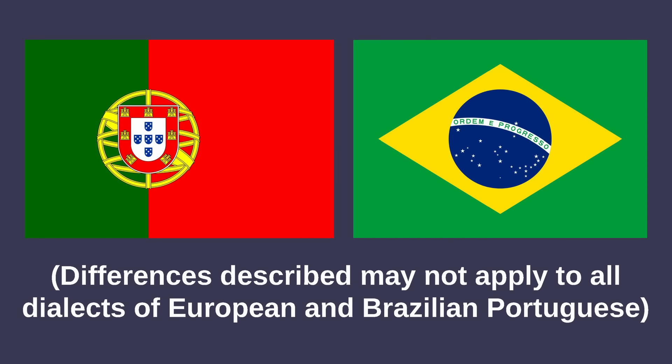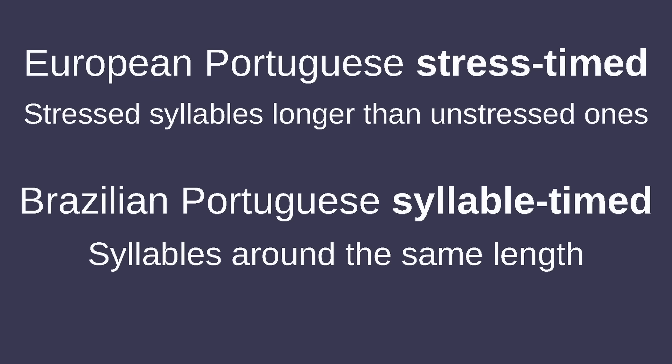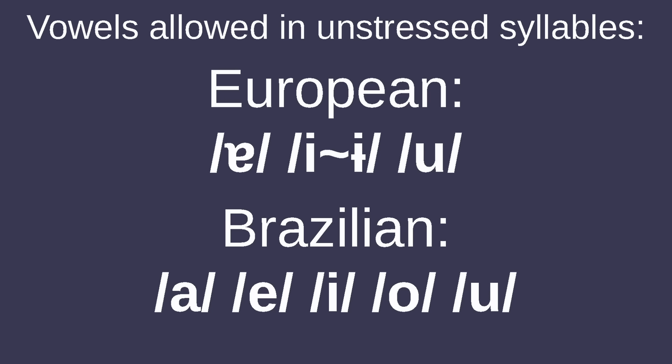There are a significant number of differences between the pronunciation of Brazilian and European Portuguese. In Brazilian Portuguese, word-final unstressed E and O are pronounced /e/ and /o/, while in European Portuguese, final E is pronounced /ɨ/. European Portuguese is also very stress-timed, where stressed syllables are significantly longer than unstressed ones, making it sound like unstressed vowels at the ends of words are dropped. Vowels not at the ends of words in unstressed syllables are reduced to /ɐ/, /ɨ/, /ʊ/ in European Portuguese, while Brazilian Portuguese has /a/, /e/, /ɛ/, /o/, and /ɔ/.